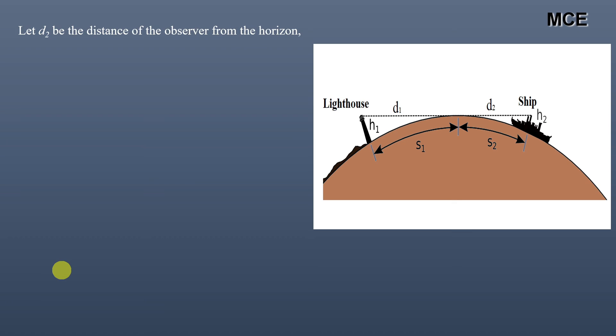Similarly, let d2 be the distance of the observer from the horizon. Then h2 = 0.0673 d2², or d2 = √(h2 / 0.0673).